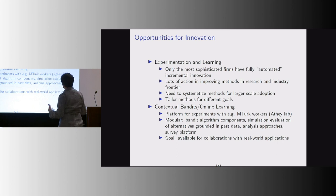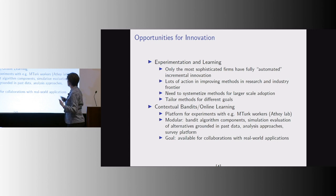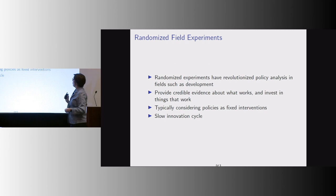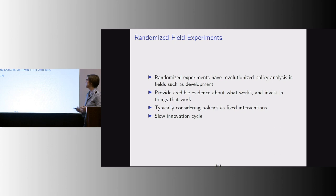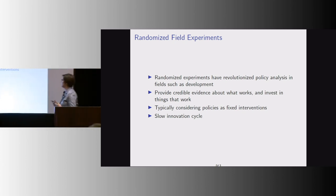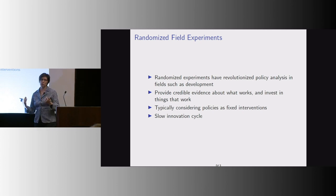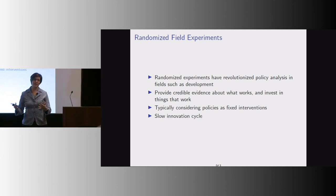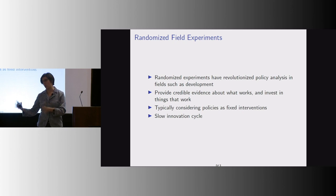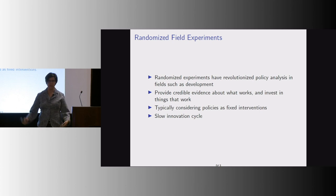When I think about the goals of bandits, we start with randomized experiments. Randomized experiments revolutionized policy analysis in fields like development by providing credible evidence about what works. But the problem is you have to spend a lot of time figuring out what you're going to test, then spend like a year testing it, and most of the time it doesn't work. It's not a very rapid innovation cycle, and firms in EdTech are moving away from randomized evaluations because it takes so much time and isn't actionable.